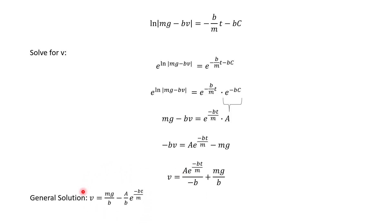Okay, and so our general solution, I just moved the terms over, is v equals mg over b minus a over b, e to the negative bt over m.